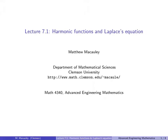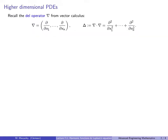Welcome to lecture 7.1: Harmonic Functions and Laplace's Equation. I'm going to motivate this with a quick crash course on higher dimensional PDEs, notably the heat and wave equation in n dimensions. The del operator is a length-n vector of partial derivatives — it's a vector of linear operators. The Laplacian operator is just del dot del, sometimes written as del squared. Taking the dot product of del with itself gives a differential operator that is the sum of the second partial derivatives.